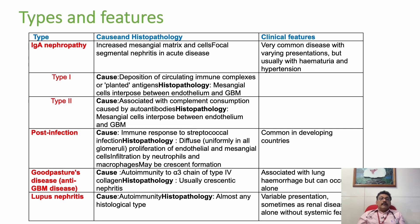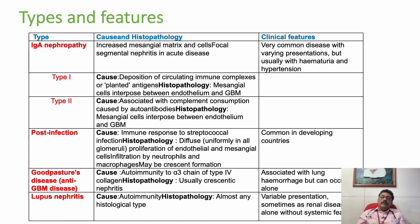Another important disease is Goodpasture disease, which is associated with lung hemorrhages — kidney failure with lung hemorrhages together. Lupus nephritis presents with SLE features like facial malar rash, hair loss, other organ involvement, and kidney involvement — that is called lupus nephritis.